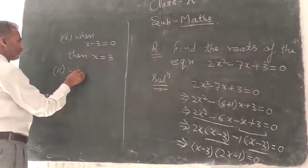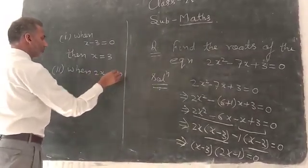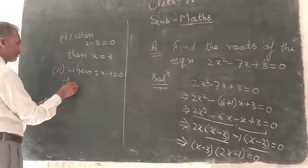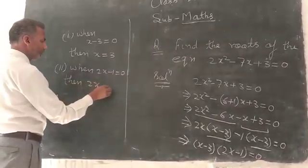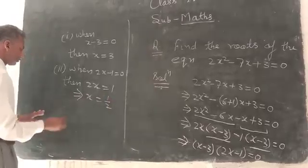when 2x minus 1 equal 0, then 2x equal 1, which implies x equal 1 over 2.